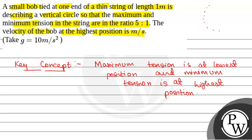Suppose this is a vertical circle in which the circular motion is taking place and this is the point of suspension which is at the center. This is the bob. At the lowest position, it will have a speed v1 in this direction. The weight mg will act downward and the tension will be in the string in the upward direction, and the length of the string is L.